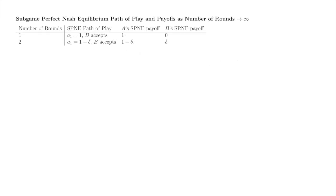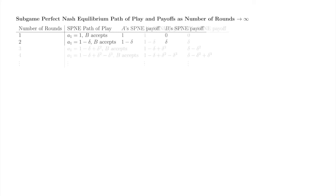This table summarizes the path of play and payoffs associated with the subgame perfect Nash equilibria of the 1 and 2 round bargaining games. The next two rows of the table extrapolate based on the derivations we did for the 1 and 2 round bargaining games. We could do backwards induction for the 3 or 4 or more round games, but we won't do so in this video. We could, in fact, just keep tacking on another round of the ultimatum game after every rejection. This alternating play of the ultimatum game is Rubinstein's Infinite Horizon Alternating Offer Bargaining Game.